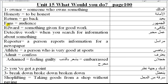Fans — audience. Reward — something given for good work. Detective work — when you search for information about something. Note the stress on the vowel sound: 'about' — don't say 'about,' say 'about.'